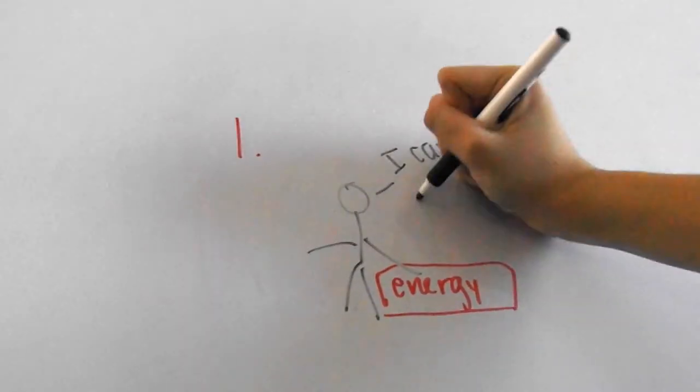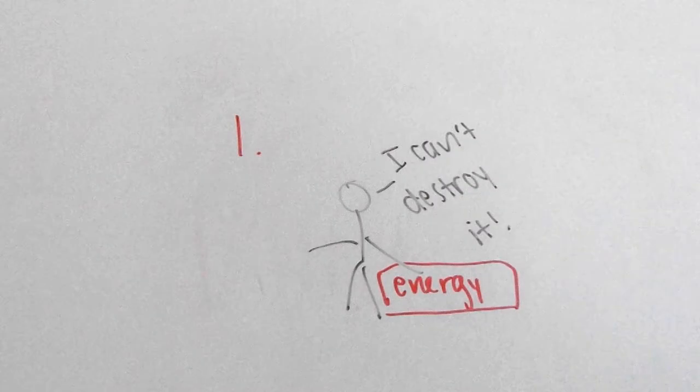So the first law of thermodynamics says that energy can be transferred and transformed, but not destroyed. Energy is always flowing, and it's impossible to lose or create energy.